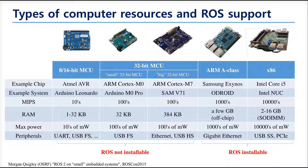The x86 processor on the right side can be thought of as the computer in your laptop. An ARM-A class is a processor found in almost all smartphones. These two are called SBC, and ROS is installable on them. On the other hand, the processors on the left side are the MCUs. They are used for real-time controls and are very fast, but due to the lack of memory, ROS is not installable on them. Only firmware-level operation is available.